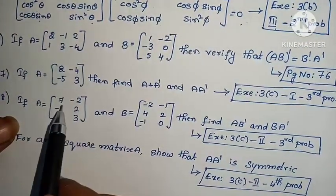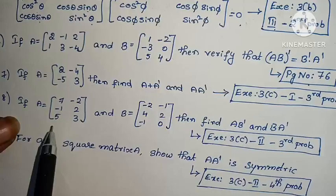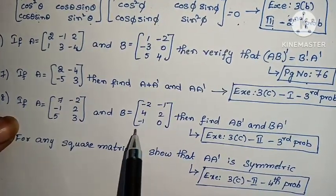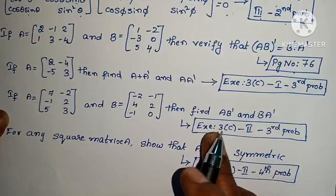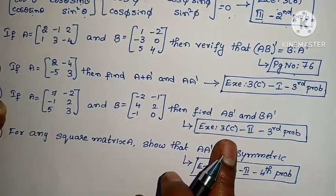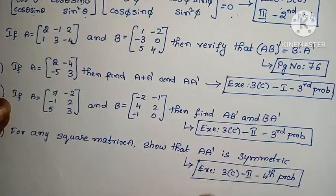Eighth one: if A equals to [7, -2; -1, 2; 5, 3], and B equals to [-2, -1; 4, 2; -1, 0], then find (AB)ᵀ and (BA)ᵀ. Exercise 3(c), second roman, third problem.